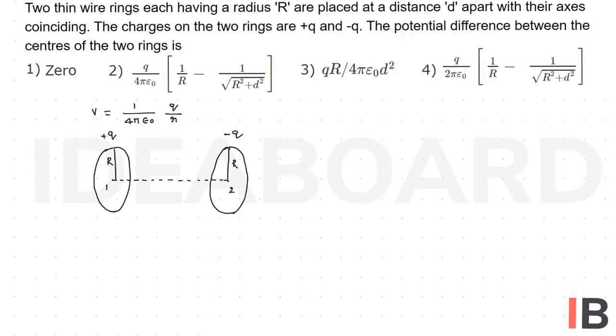And if you take the distance between the centers of the two rings is d, whereas this distance is equal to √(d² + r²). This distance also √(d² + r²).